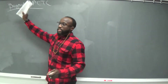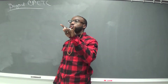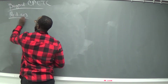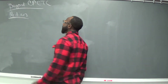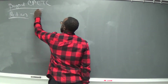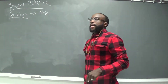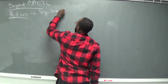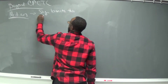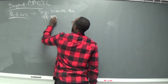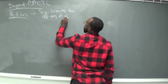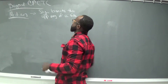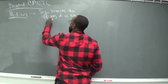With beyond CPCTC, we have to learn two or three new vocabulary words. The first one is median. The median is the segment that basically bisects the opposite side in a triangle — the segment that cuts the opposite side in half.